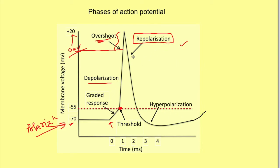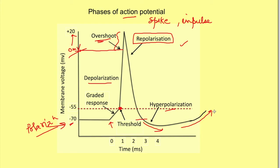The repolarization phase slope is a little less steep than the depolarization phase. Depolarization is almost like a spike — that's why action potential is also known as spike potential or an impulse. Once the potential reaches towards resting membrane potential, it does not stop there; instead it becomes more negative. This change in potential towards more negative than RMP is known as the hyperpolarization phase of the action potential, after which it slowly comes back to resting membrane potential.